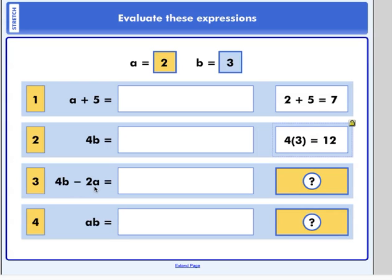Now number three is an example where we'd have to substitute for both a and b. If you've got four b minus two a, what do you have? Four b is twelve. Minus two a. Two times two is four. So twelve minus four. Our solution is eight. And in number four, we've got a b. Remember that's a times b. Two times three. So our solution is six.